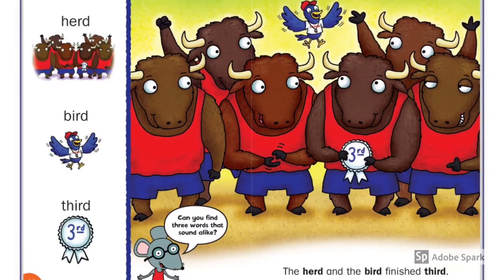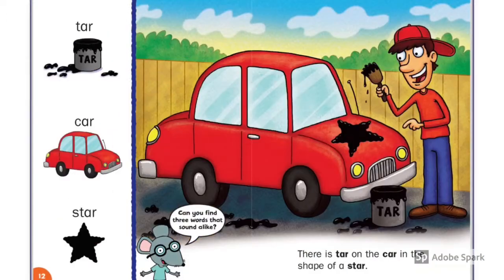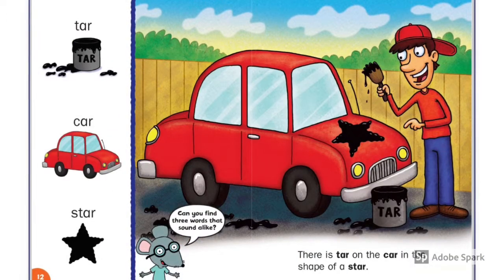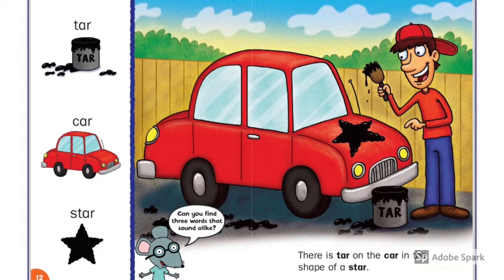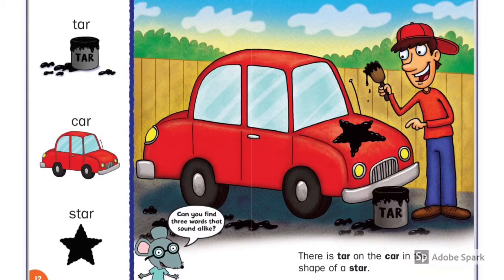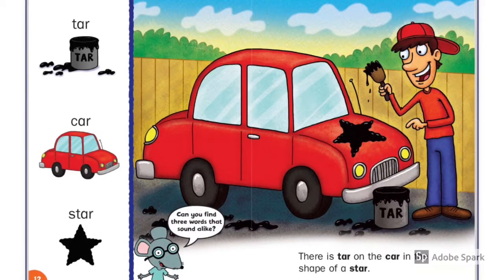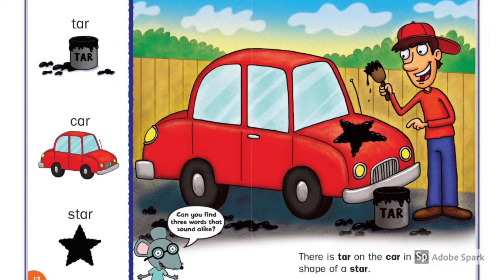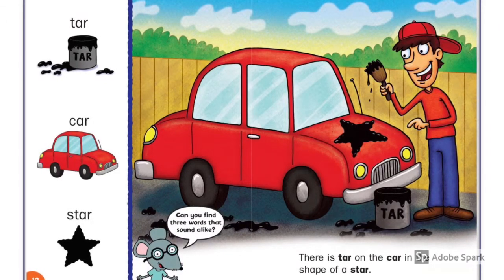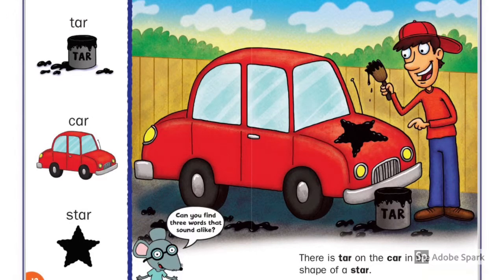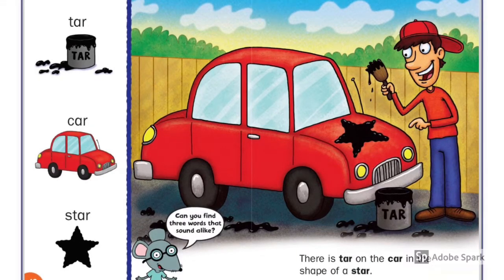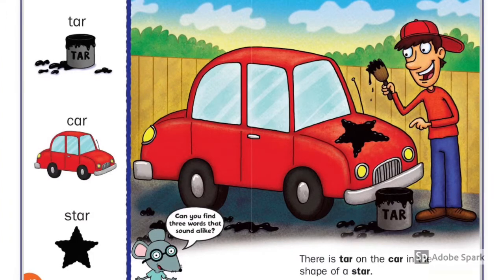Tar, car, star. There is tar on the car in the shape of a star. Look at the tar — what shape is it? What color is it? Look at the car — what color is it? Look at the man — does he like the star?